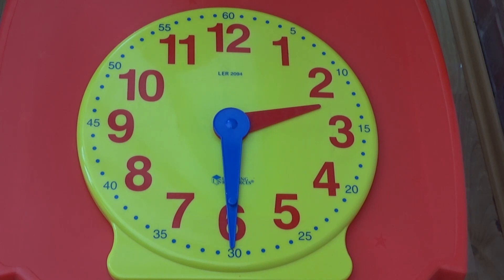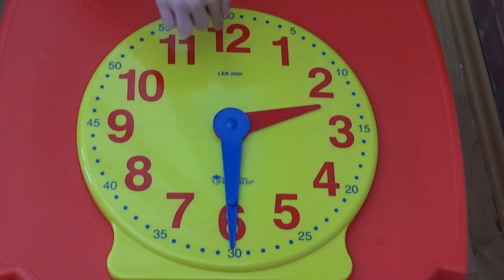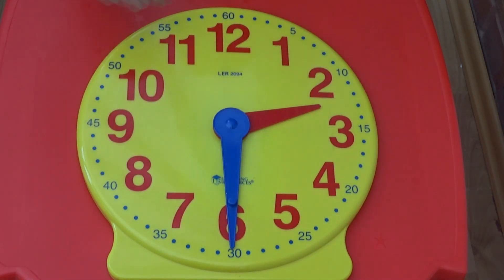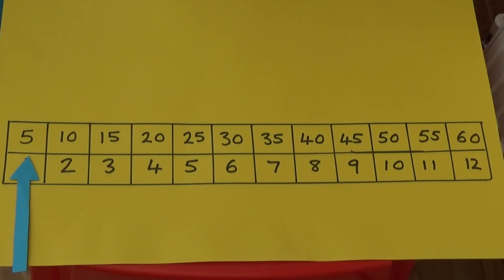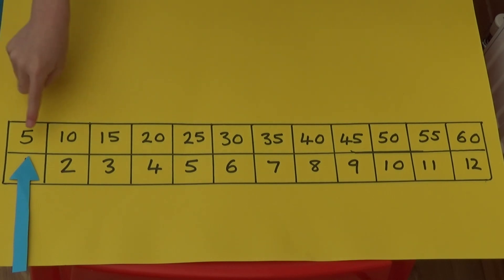If we look at the analogue clock, we can see the hours go up in ones, whilst the minutes go up in fives. We can also look at this on a number line. The hours are going up in ones, and the minutes are going up in fives.